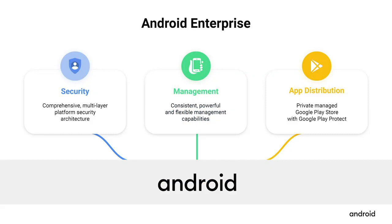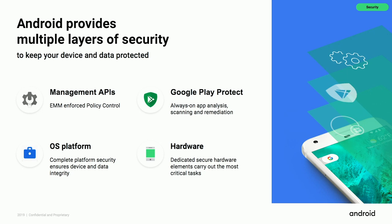Over the past few years, we've been encouraging customers to move off the legacy management framework in favor of Android Enterprise, and we have continued to invest in the enterprise in three major areas of focus: security, management controls, and application distribution. With Android Enterprise, we strive to provide a comprehensive, multi-layered, secure platform architecture. We do this by making hardware-backed security mandatory for all Android manufacturers that want to be GMS certified. We provide a number of OS-level tools to ensure the integrity of a device and its data. With Google Play Protect, we provide a mobile threat detection system with always-on app analysis, scanning, and remediation. The management APIs allow our EMM partners to control, secure, and verify the integrity of the device and the corporate data on it.